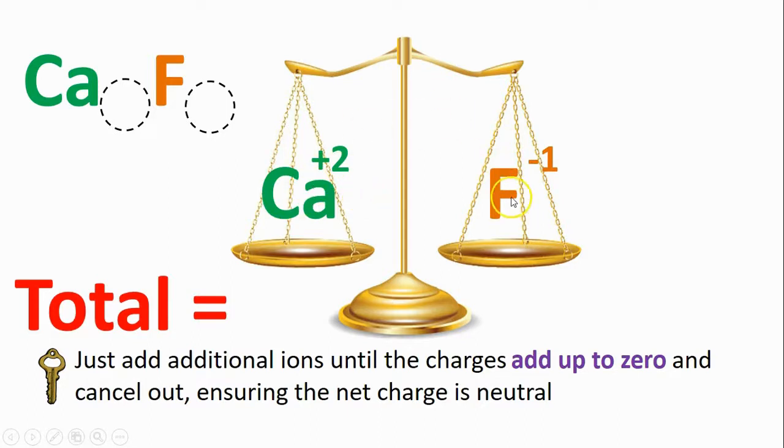To make this super obvious, beneath each side I'm going to list the total charge and we'll go through a couple scenarios. As the scale is listed right now with one calcium and one fluoride, my total positive is +2, my total negative is -1. Those definitely don't balance out. Two does not balance out with one, or think about it this way: they definitely don't add up to zero.